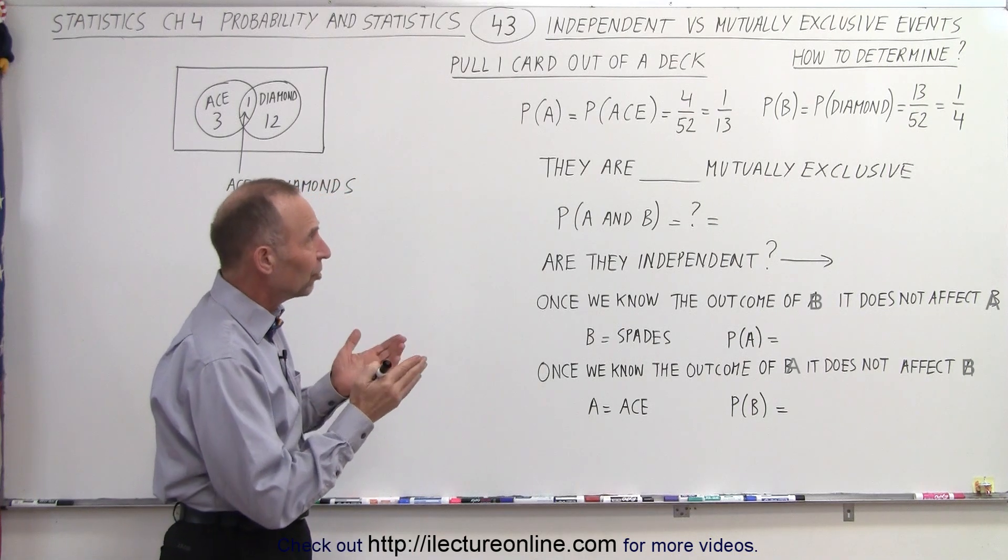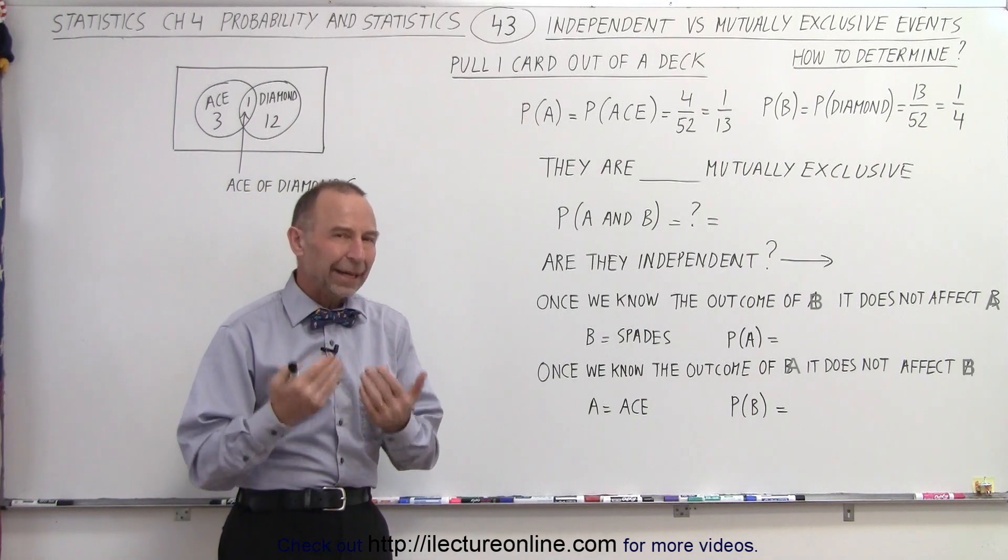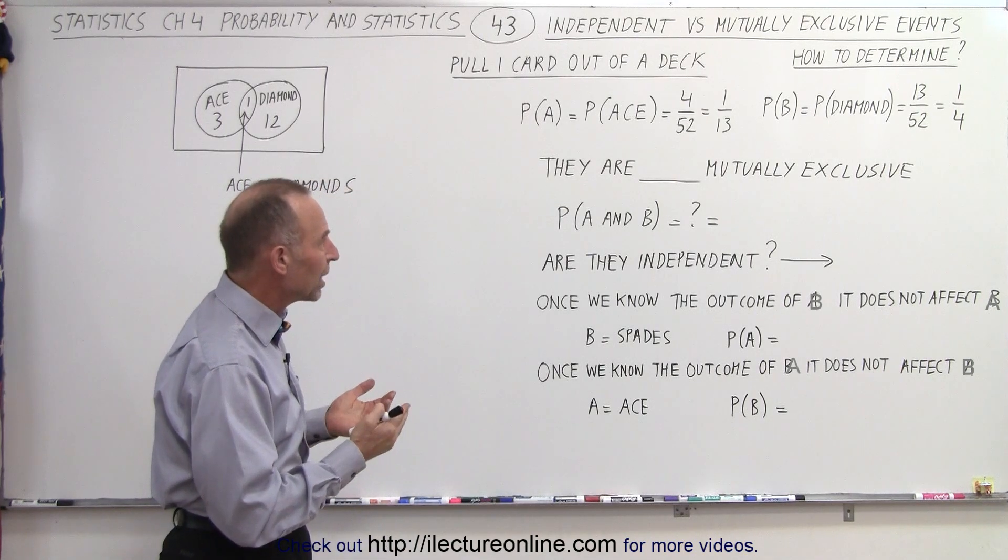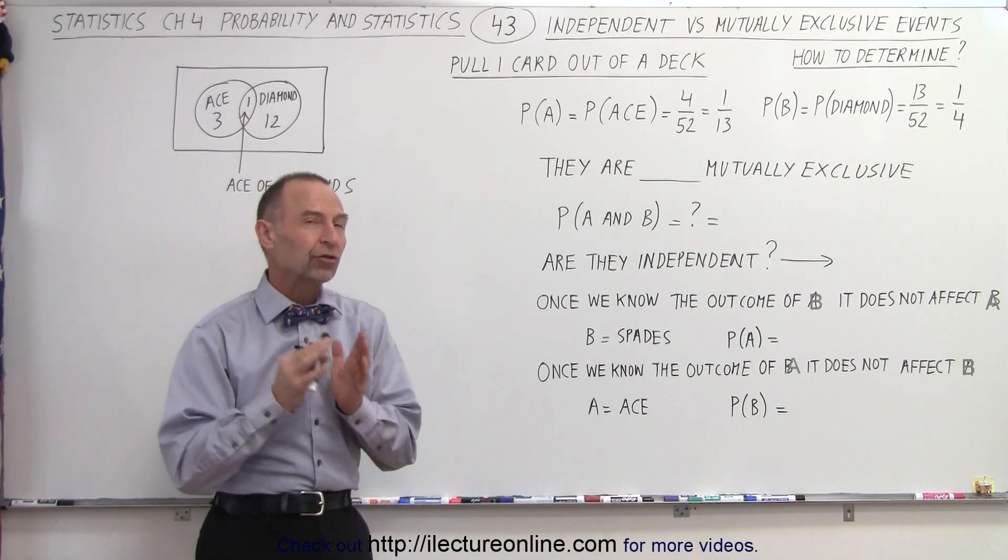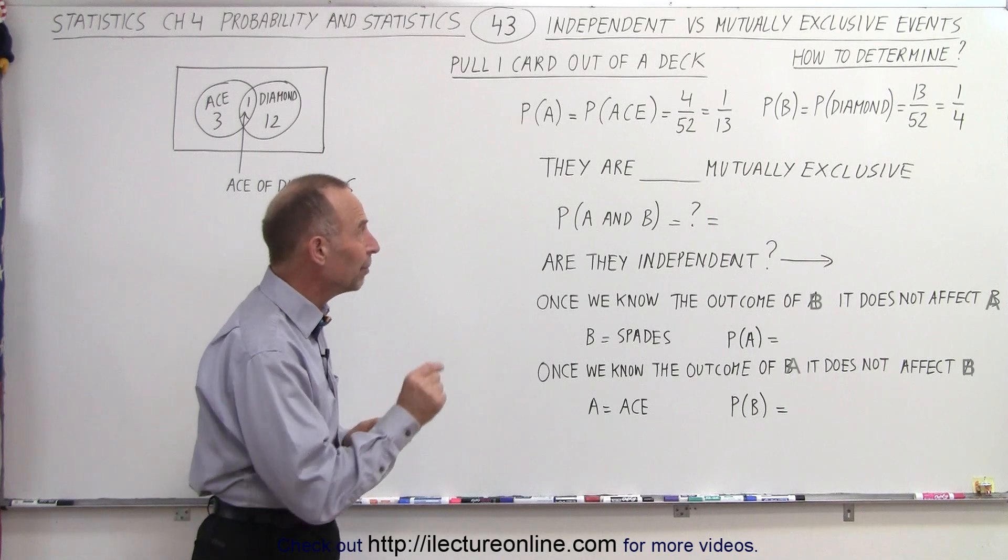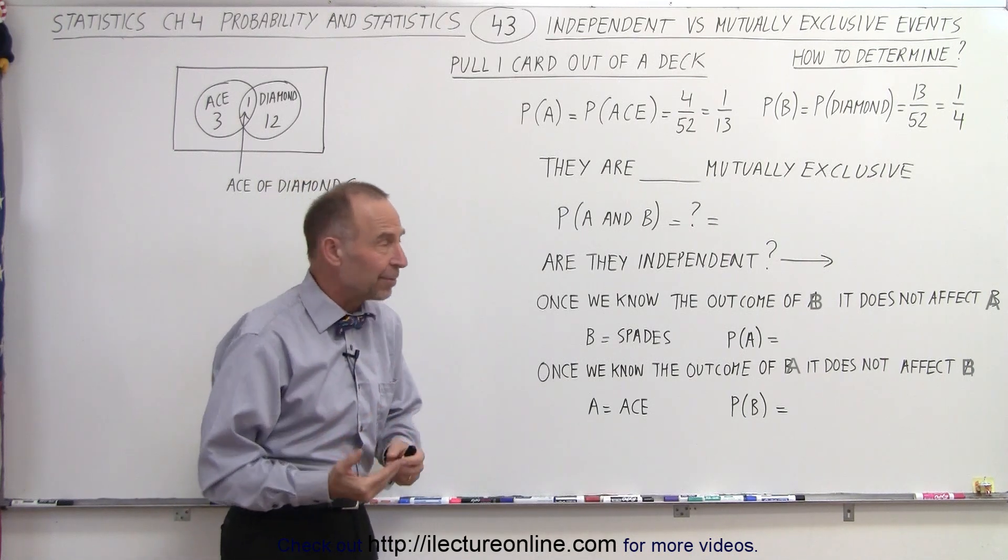And so the question is, are they mutually exclusive events and are they dependent or independent events? So here we have to conclude that they are not mutually exclusive. The reason for that is they can be both an ace and diamonds, for example, the ace of diamonds.